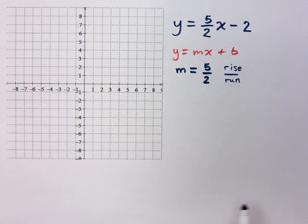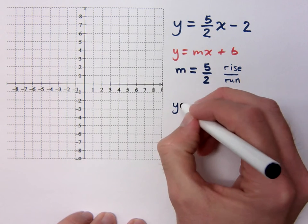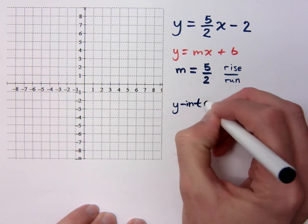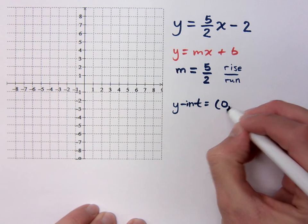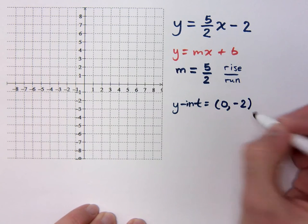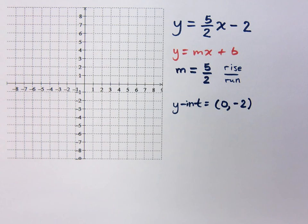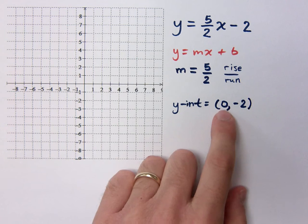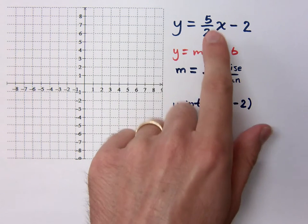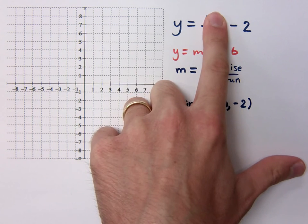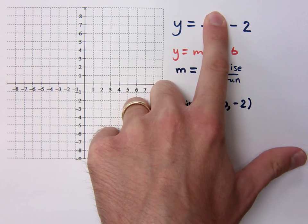What's my y-intercept? The y-intercept is the ordered pair 0, negative 2. And even if you forget that, you should still know that for every y-intercept, x is 0. And in this case, if x is 0, you would see that y equals negative 2.